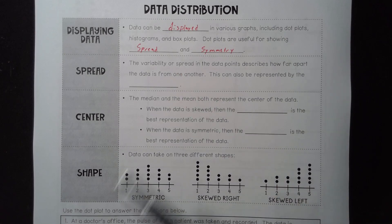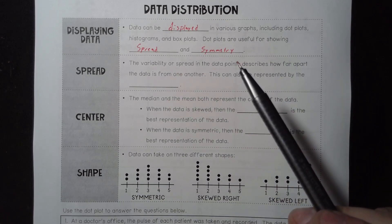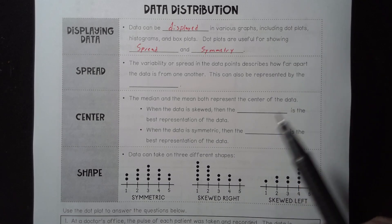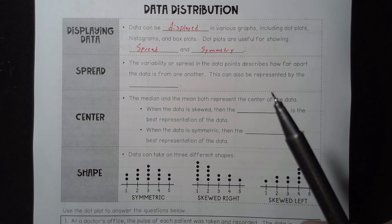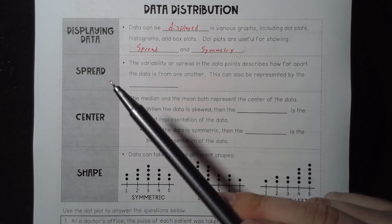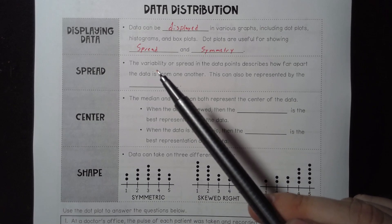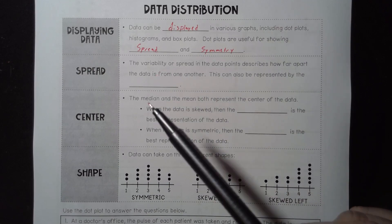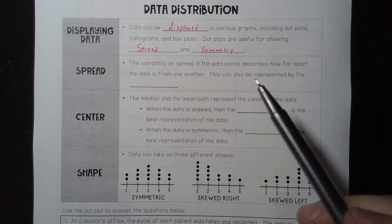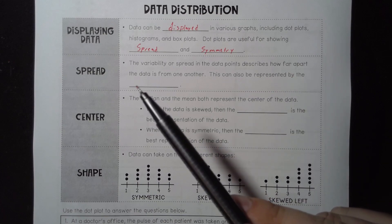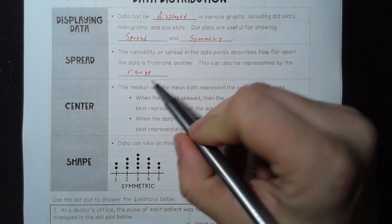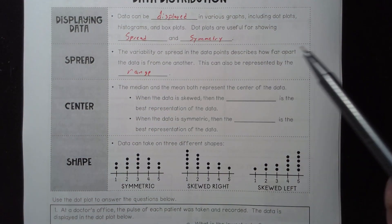It describes how far apart data is from one another. So spread, that would be, for example, talking about grades, like on various quizzes and tests. A good test that, if I give it, should have very little spread, very little variability. All my students should be scoring relatively high. If I have a wide spread, that means I have some students doing really well, some doing really bad. This can also be represented by the range. Range tends to measure variability.